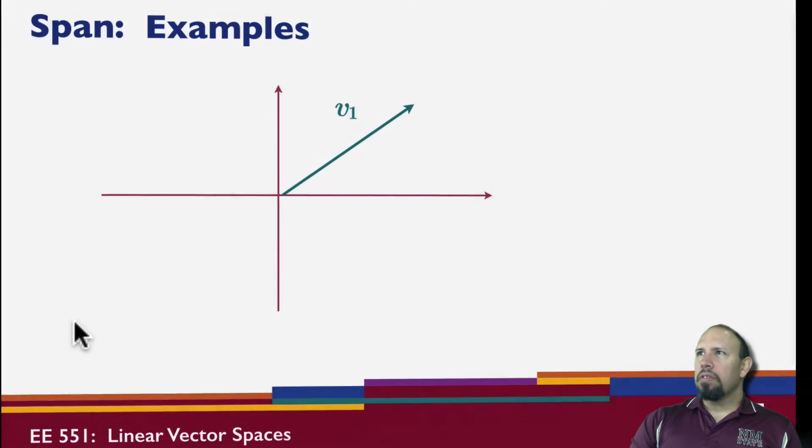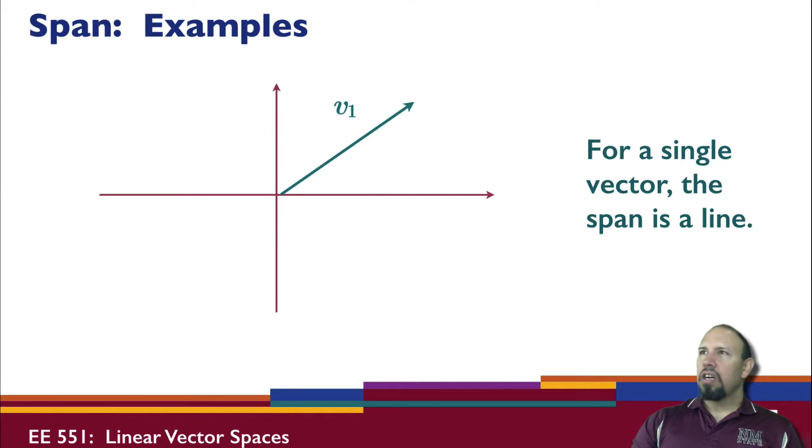Just by way of examples, here's a vector V1. For a single vector, the span of that vector is just a line in that direction. There's the span - it goes to infinity in both directions.